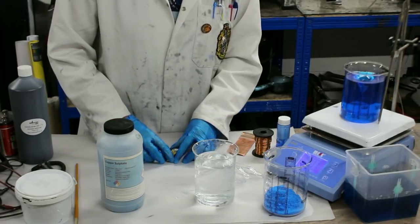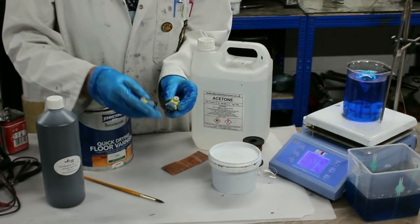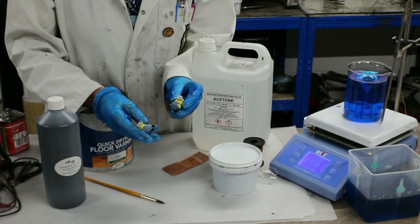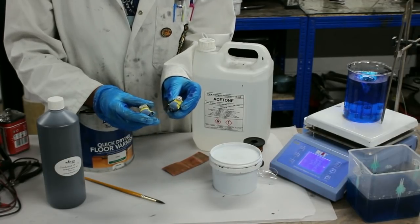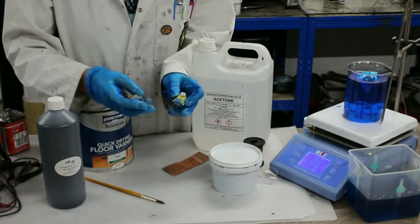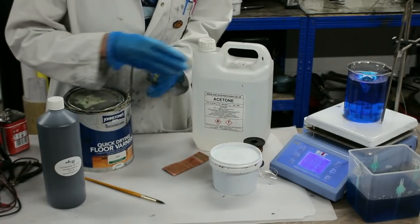Now while that's dissolving I'll show you what I'm going to copper plate. I'm going to copper plate these Minion erasers. Now you have to bear in mind that if you're going to copper plate something which may be porous or oily you need to either varnish it or wash it in acetone.